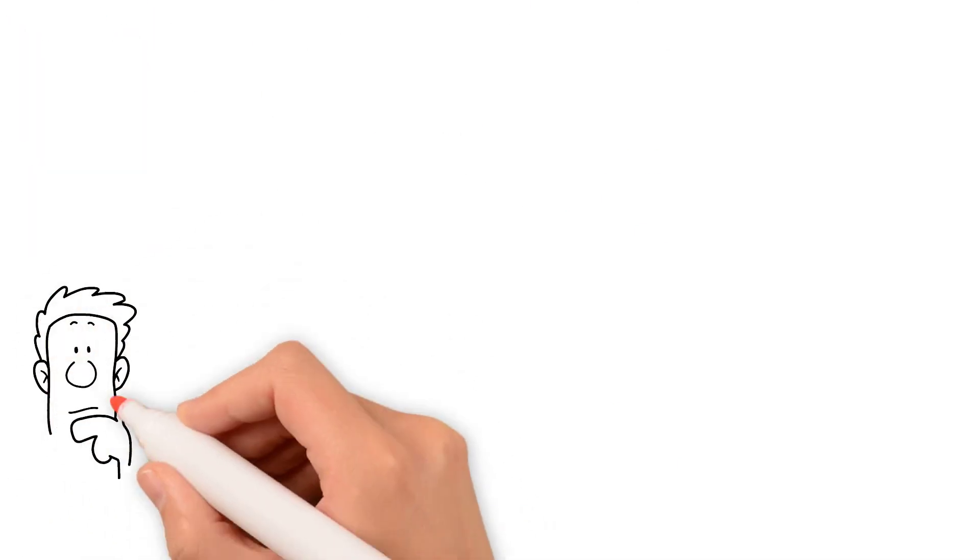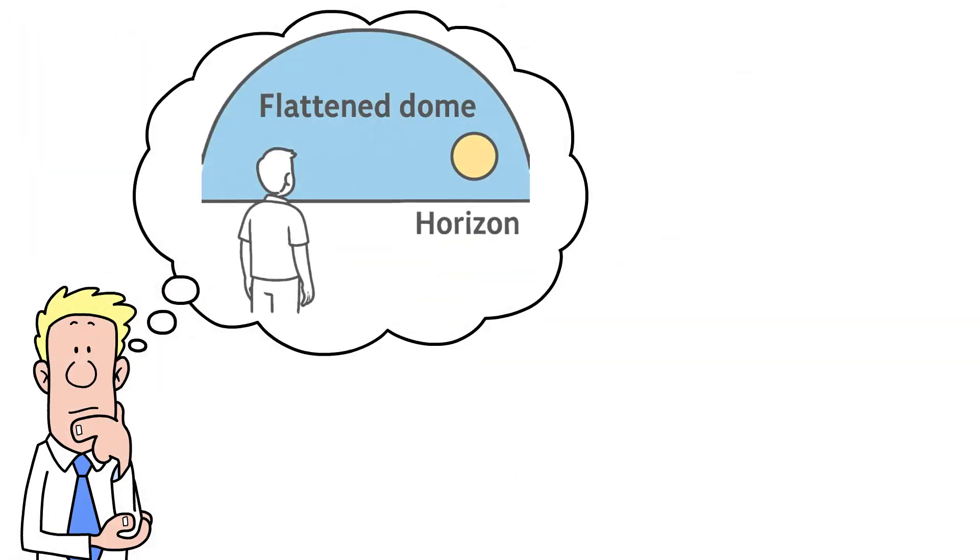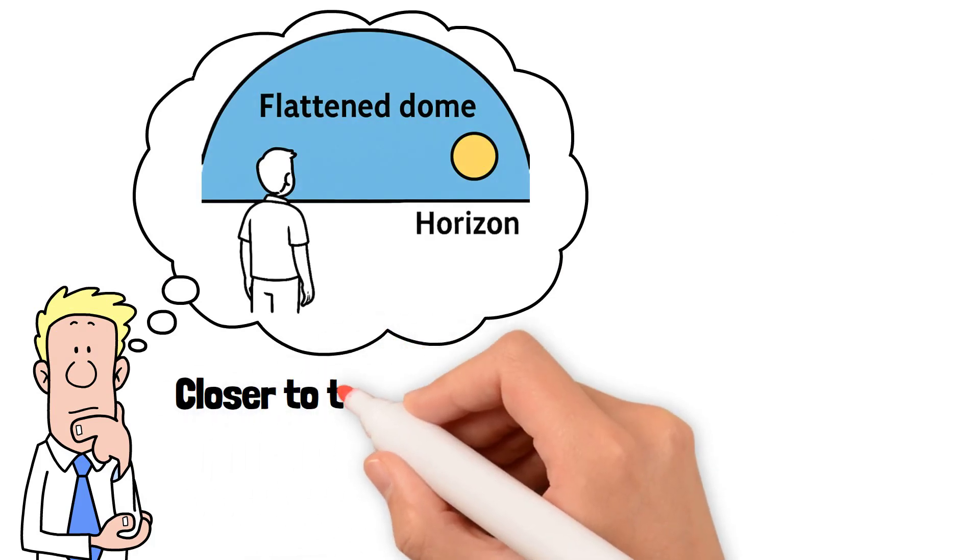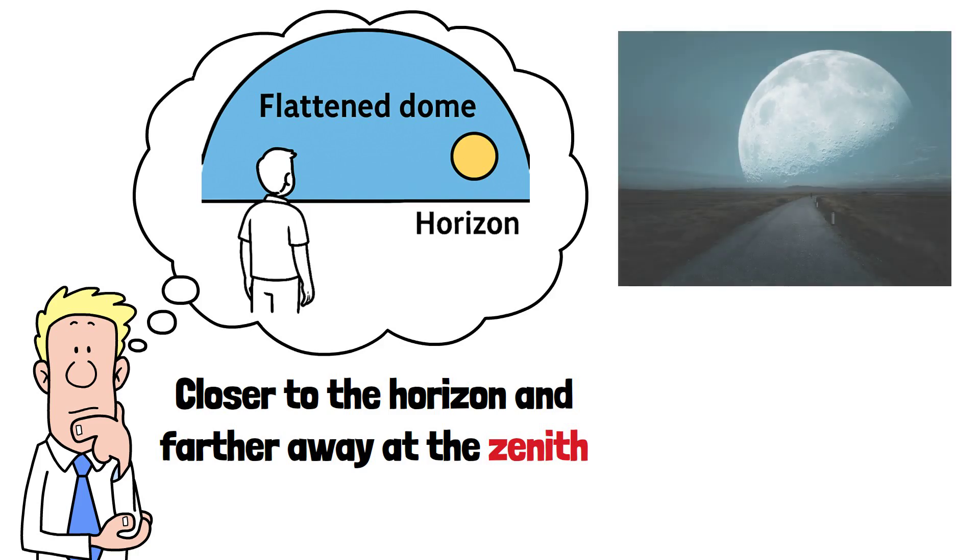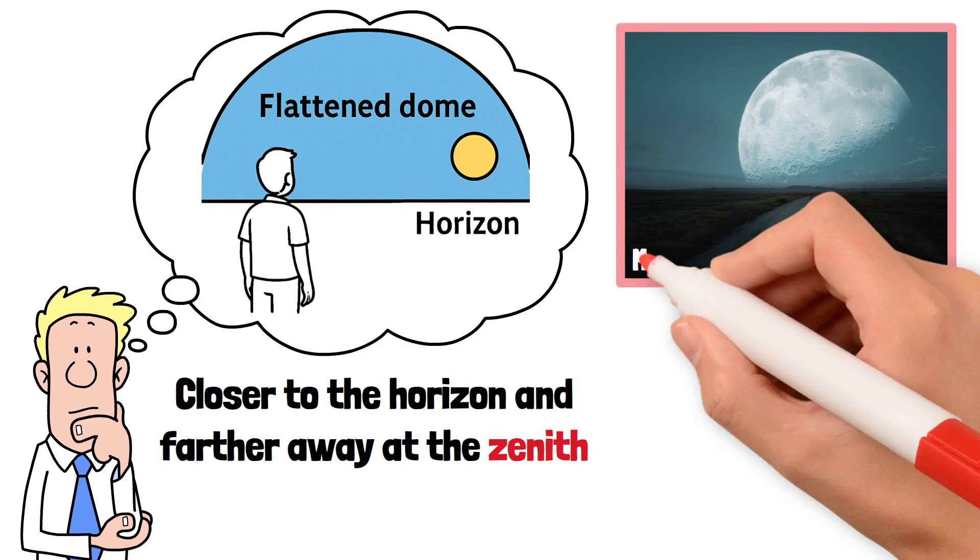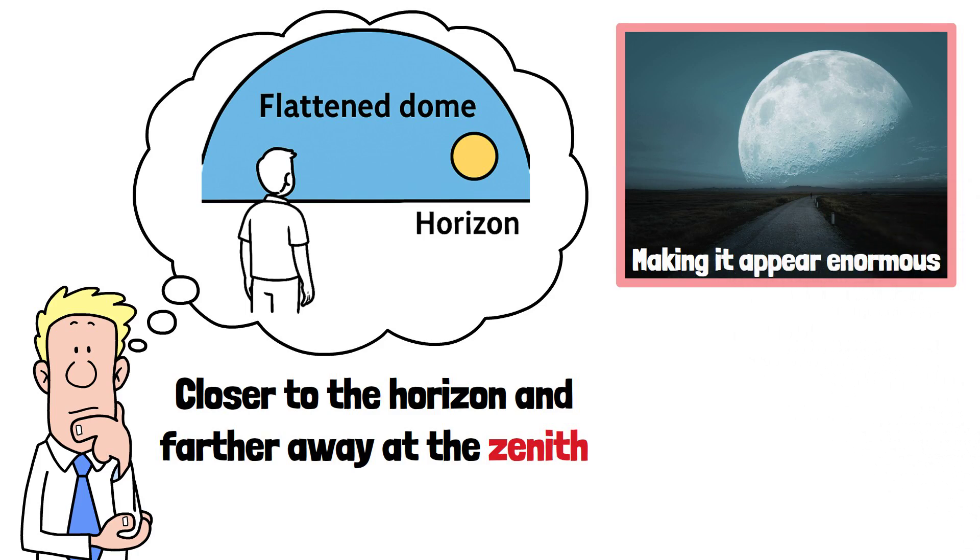Another explanation is that our brain interprets the sky as a flattened dome, closer to the horizon and farther away at the zenith. When the moon is near the horizon, our brain assumes it's farther away but still large, making it appear enormous. This phenomenon is called the moon illusion.